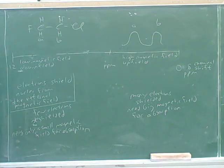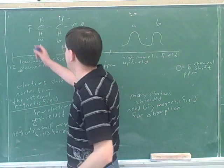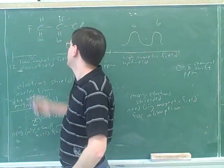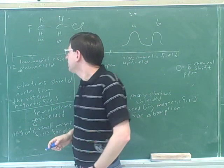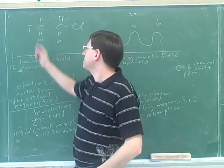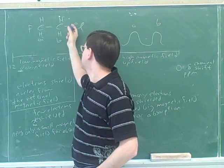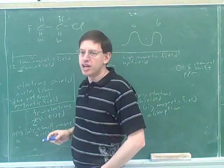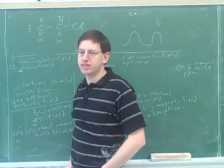If an electronegative atom deshields you, then the more electronegative it is, the bigger the deshielding effect is going to be, and the further to the left you're going to be shifted. So there's going to be a big left shift for A, and a big left shift for B too, but not as big as for A. Not only is A close to a fluorine, it's not very far from a chlorine. And not only is B close to a chlorine, it's not very far from a fluorine. But still, A is closest to the more electronegative atom, so it has the further left-hand shift.